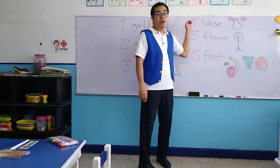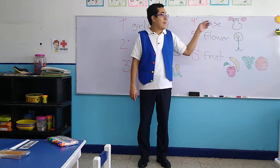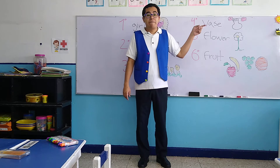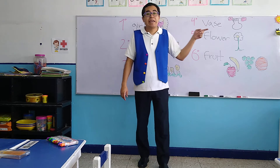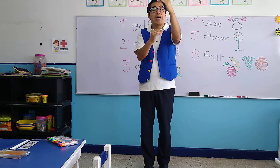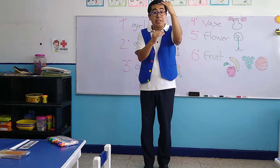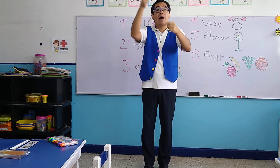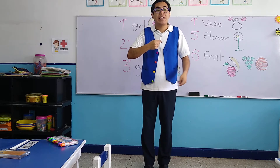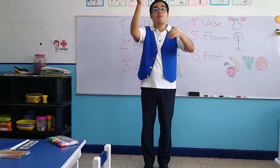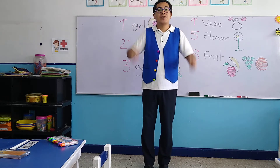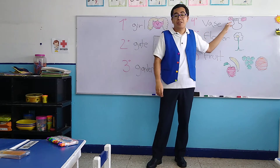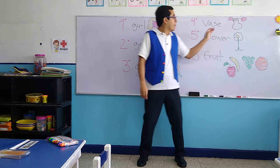Let's continue with the fourth word: 'vase.' Vase is a medium-sized object where you can put flowers. That's the vase — an object where you can put several flowers, like the example that is right here.